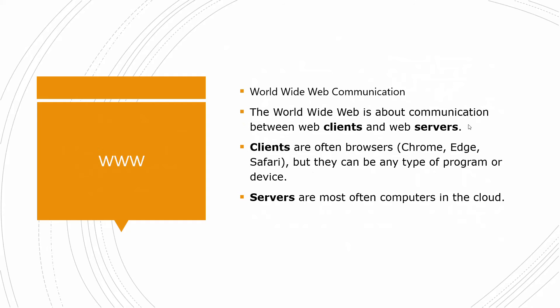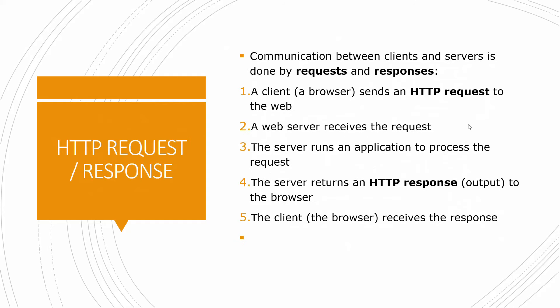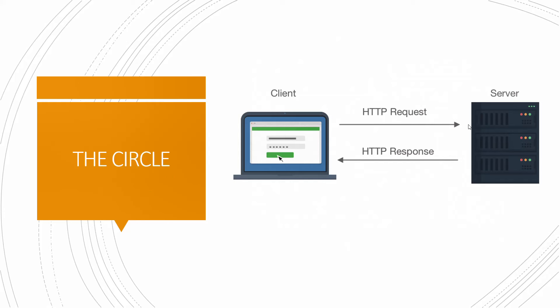The communication between client computers and web servers is done by sending HTTP requests and receiving HTTP responses. Hypertext Transfer Protocol — please remember this. The World Wide Web is about communication between web clients and web servers. Clients are often browsers, and servers are computers stored in the cloud. From the browser you send the request, it goes to the server, the server looks for the information and returns the response back to the client — using Hypertext Transfer Protocol both ways.